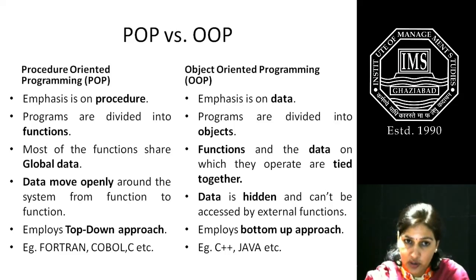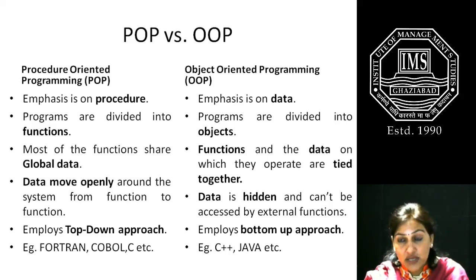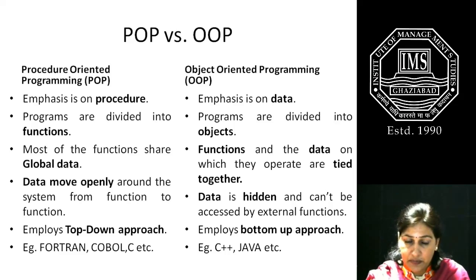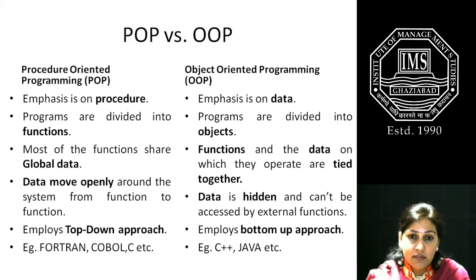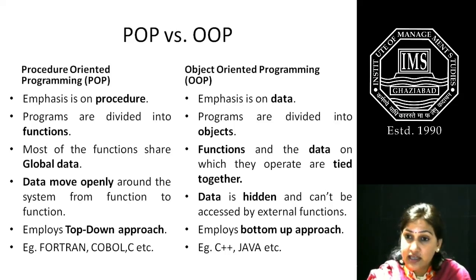In procedure-oriented programming, most functions share global data, where data can be changed by any of the functions. But in object-oriented programming, functions and the data they operate on are tied together so that no other function can change the data accidentally. In procedural programming, data moves openly around the system from function to function, whereas in object-oriented programming we use the concept of information hiding or data hiding, so data is hidden and cannot be accessed by external functions.